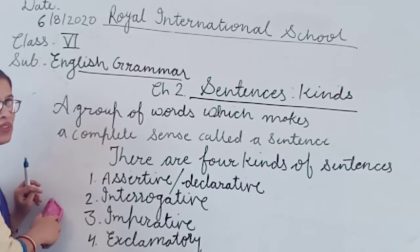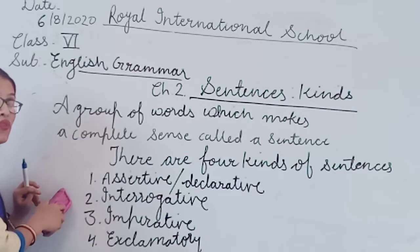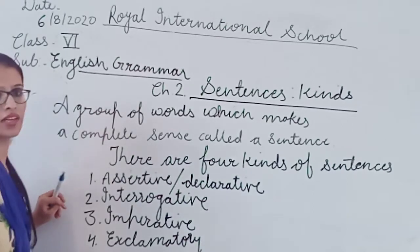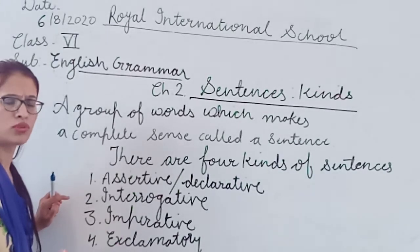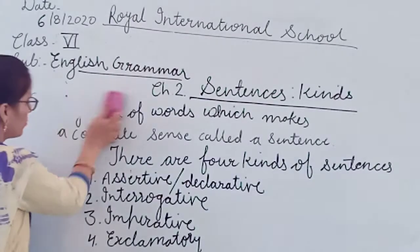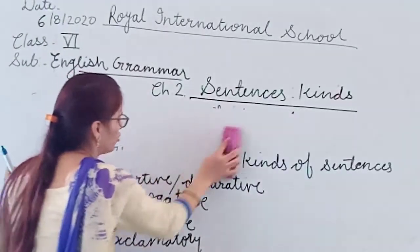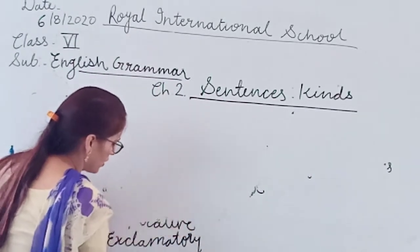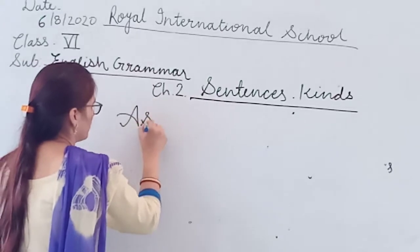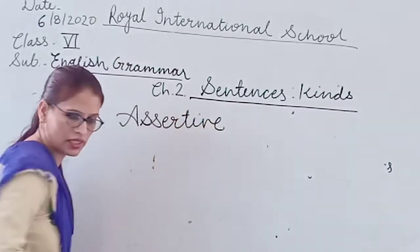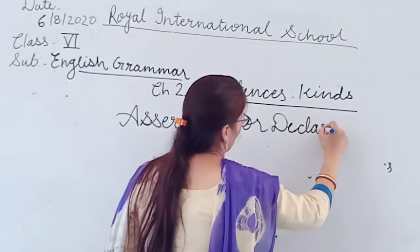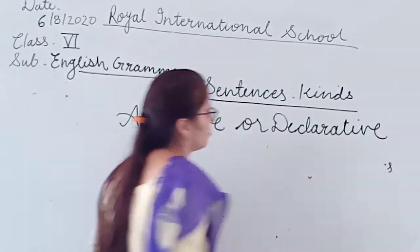Assertive sentences make a simple statement. Interrogative sentences ask questions. Imperative sentences make requests or give orders. Exclamatory sentences express sudden emotion - like sudden sadness or great happiness. Now I am going to start explaining assertive or declarative sentence.